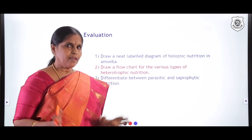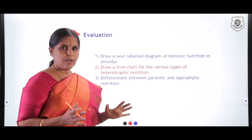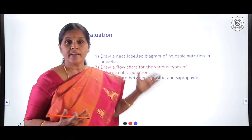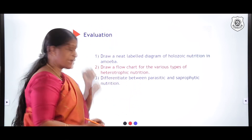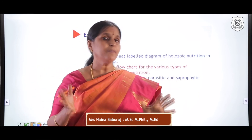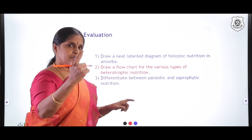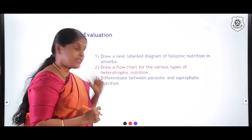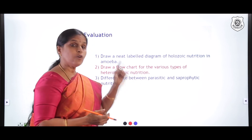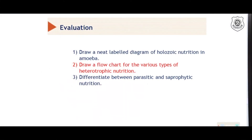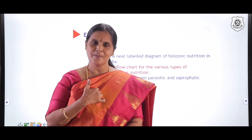Now it is time for evaluation. Read the concepts thoroughly and attempt the questions: draw a neat labelled diagram of holozoic nutrition in Amoeba, draw a flow chart for the various types of heterotrophic nutrition, and differentiate between parasitic and saprophytic nutrition. Parasitic organisms depend on a living host, while saprophytes depend on dead organic matter. In the next module we will learn something very interesting about holozoic nutrition and ourselves. Namaste.